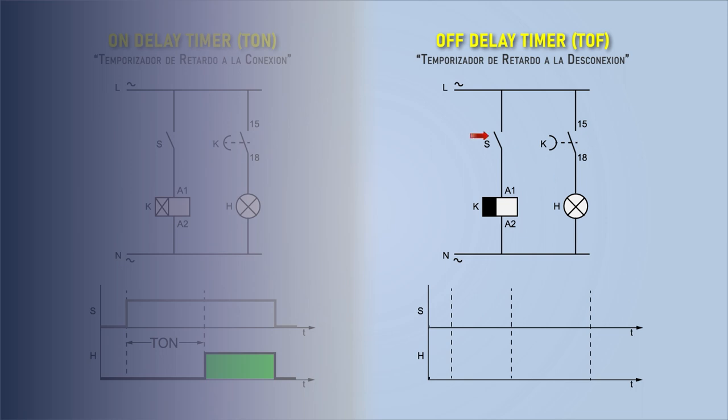If we close the S contact to energize the K coil, immediately the K contact of the timer also closes, that is, it switches and allows the current to pass to turn on the H indicator.